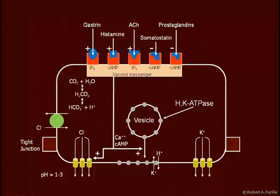This potassium is then free to leak back out, pump back in, leak back out, and so on — continuing to drive a high hydrogen ion concentration in the stomach. There is very little potassium; most of the contents of the stomach are hydrochloric acid — hydrogen ions and chloride. There is a drug called cimetidine, which is an H2 histamine receptor blocker, found in over-the-counter drugs like Tagamet, and it is a competitive inhibitor for histamine.